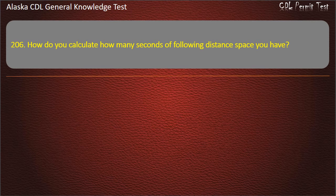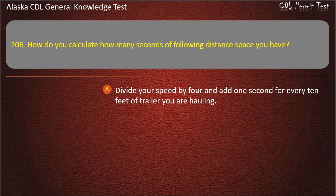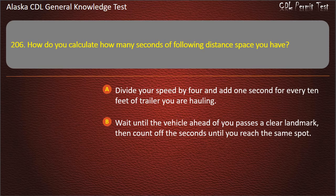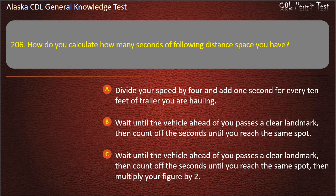Question 206. How do you calculate how many seconds of following distance space you have? Divide your speed by 4 and add 1 second for every 10 feet of trailer; wait until the vehicle ahead passes a clear landmark then count off the seconds until you reach the same spot; or the same method but then multiply your figure by 2. Answer: Wait until the vehicle ahead of you passes a clear landmark, then count off the seconds until you reach the same spot.